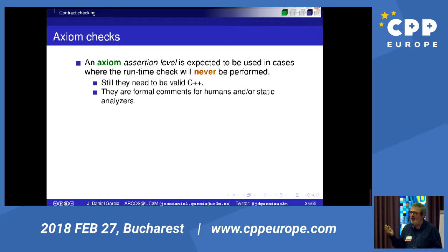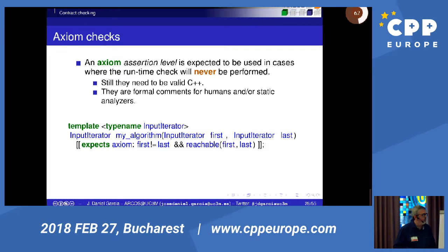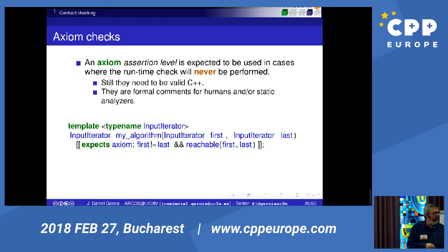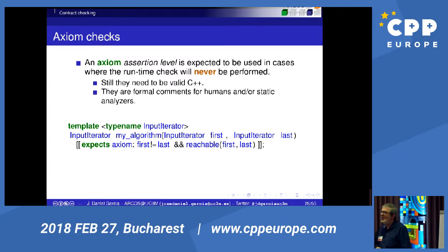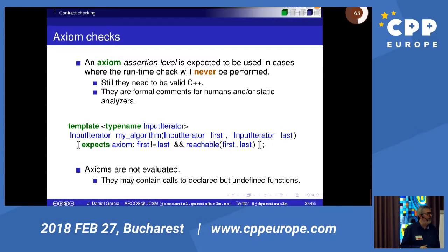Axiom assertions are assertions that are never checked — never. Are they still useful? First, you can see them as documentation that goes through the compiler. Second, and probably more interesting, even if an axiom is not going to be checked, a static analyzer can use this information and an optimizer can use it too. For example, I have an algorithm taking two iterators with an axiom precondition 'reachable(first, last)'. I only need to declare 'reachable' — I don't even need to implement it, because it's an axiom. This opens some interesting opportunities.